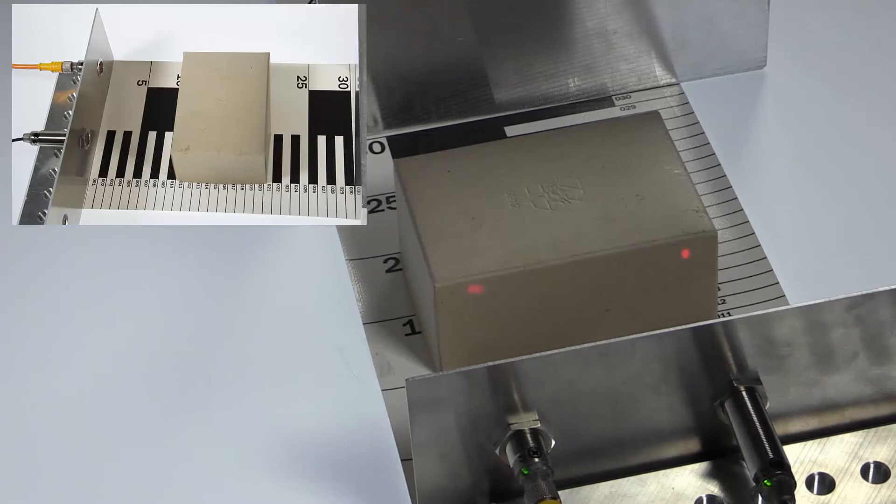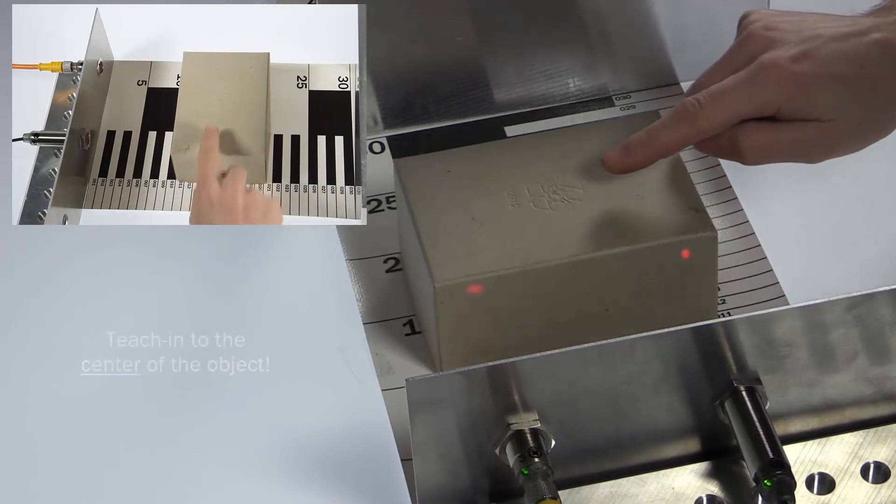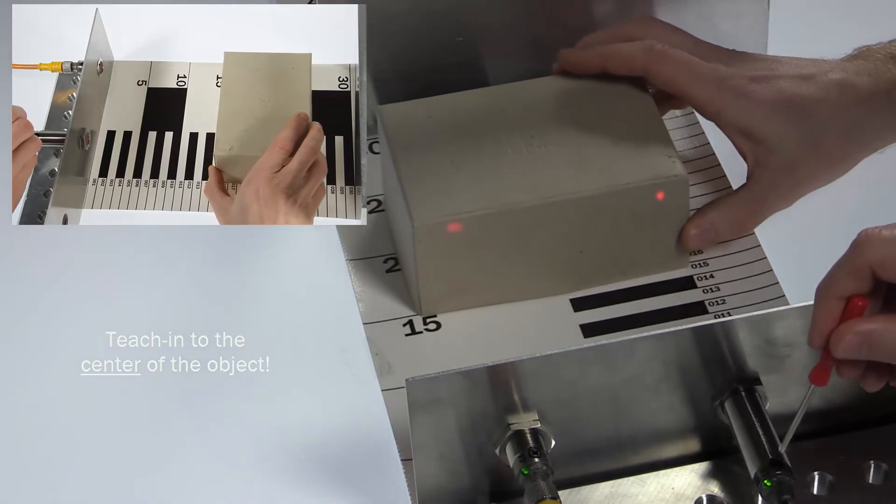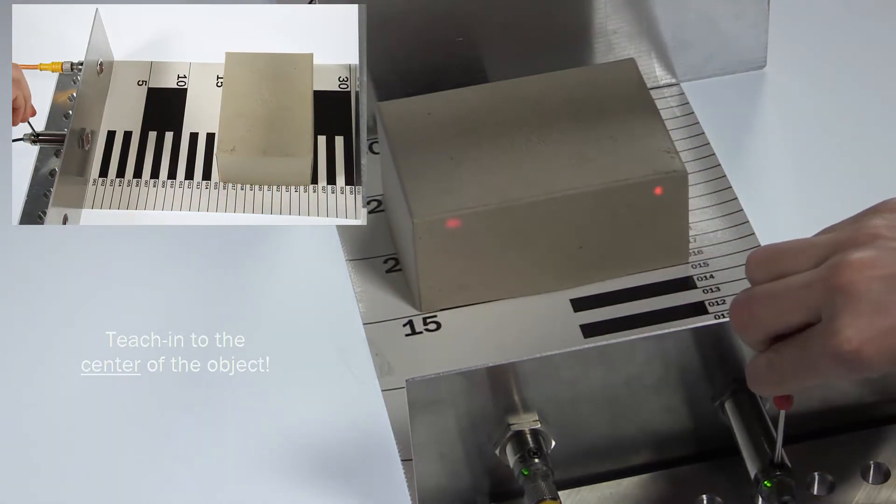Attention! It is a common mistake to teach the sensor to the front edge of the target. Please teach in the target with some reserve, more precisely to the middle of the object. This will allow a safe detection even with shaking objects, conveyors or irregular surfaces.